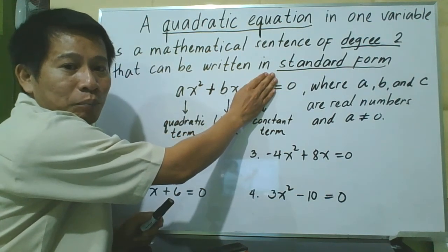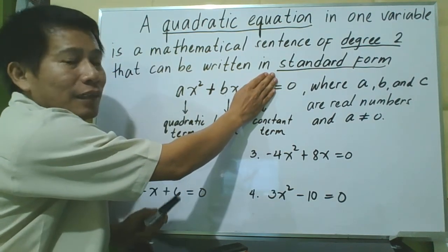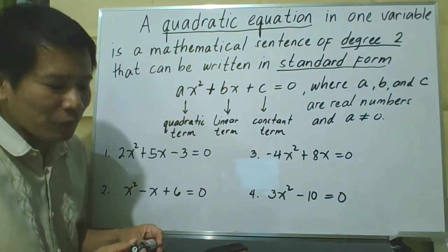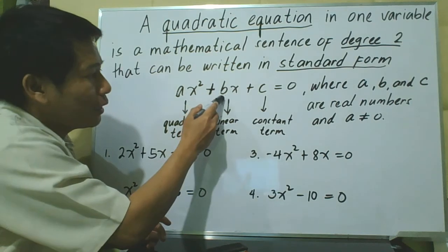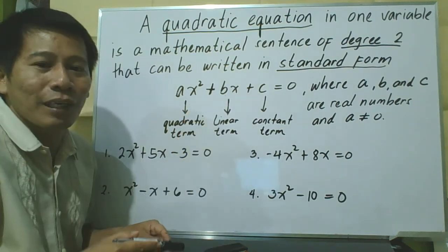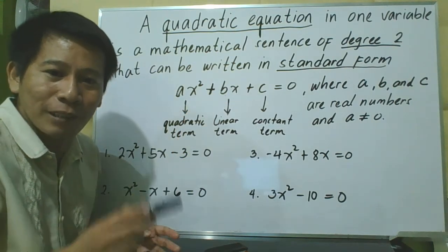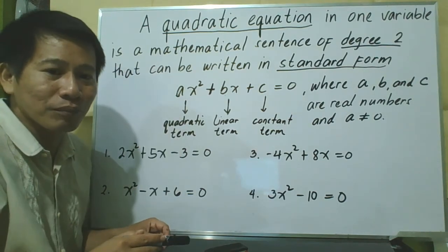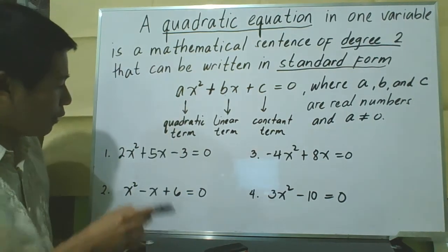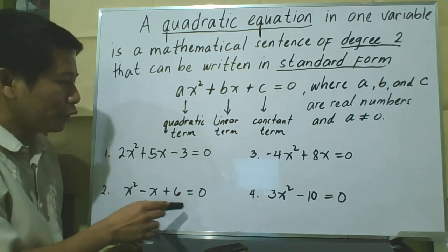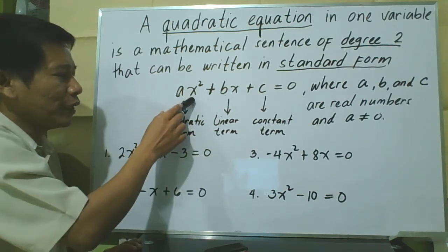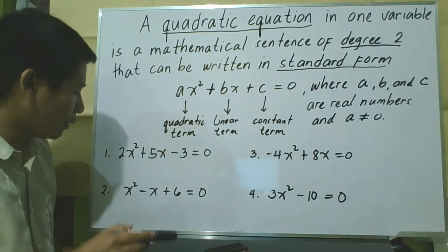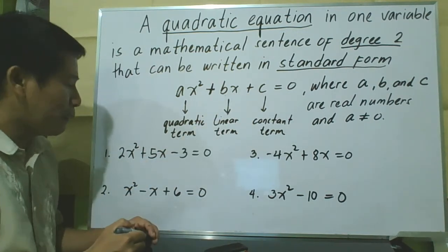In other words, the values of b and c can be 0, provided that a is not equal to 0. Now let us consider the following examples written in the standard form ax squared plus bx plus c equals 0, and identify the values of a, b, and c.